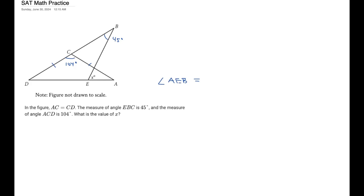First off, they tell us that AC equals CD. So this triangle ACD is an isosceles triangle, because these two side lengths are equal. That means angle D and angle A are going to be equal to each other. Because there are only 180 degrees in a triangle, and we know angle ACD is 104 degrees, that leaves 76 degrees between those two angles. We divide that in half and get 38 degrees. So angle A is 38 degrees and angle D is also 38 degrees.